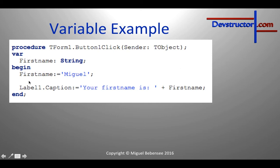Before I can use my name I have to do a definition so that Free Pascal knows what 'first name' is. And because I am doing this definition in a procedure, it has to be at the head of the procedure, before we start with the begin block. This definition consists of my identifier, a colon, the data type, and a semicolon at the end.